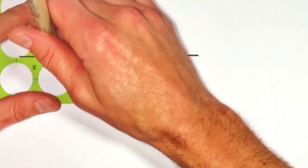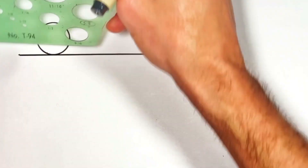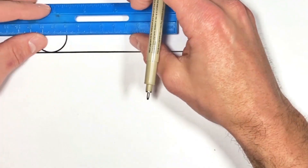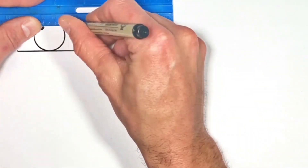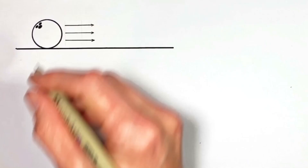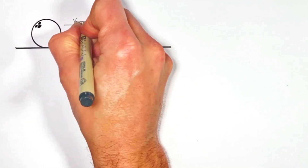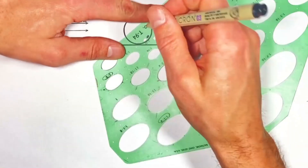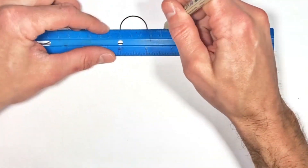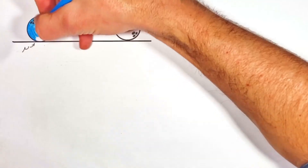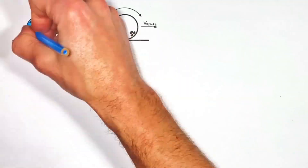We've got a bowling ball which has been tossed down a lane at some initial velocity. This ball isn't rotating — it's just sliding along a rough surface. Because there's friction between the ground and the ball, eventually the ball is going to wind up rolling without slipping. Today we're going to solve for the velocity of that bowling ball once it's rolling without slipping.